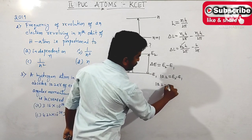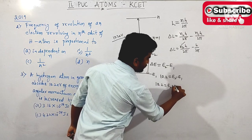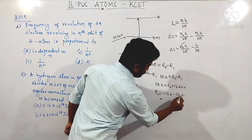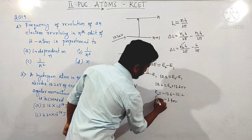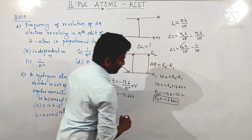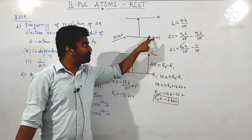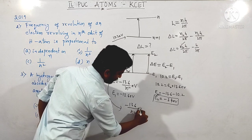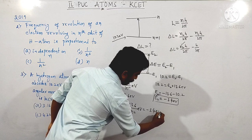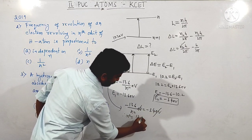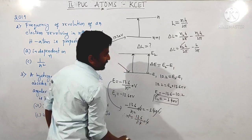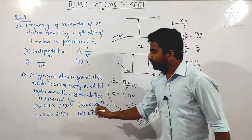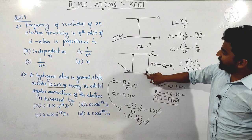Substituting: 10.2 = E₂ − (−13.6), so E₂ = −13.6 + 10.2 − 13.6... giving E₂ = −3.4 eV. Using the general formula −13.6/n² = −3.4, we get n² = 4, so n = 2. The electron is now in the second orbit. The change in angular momentum is: ΔL = 2h/2π − h/2π = h/2π.